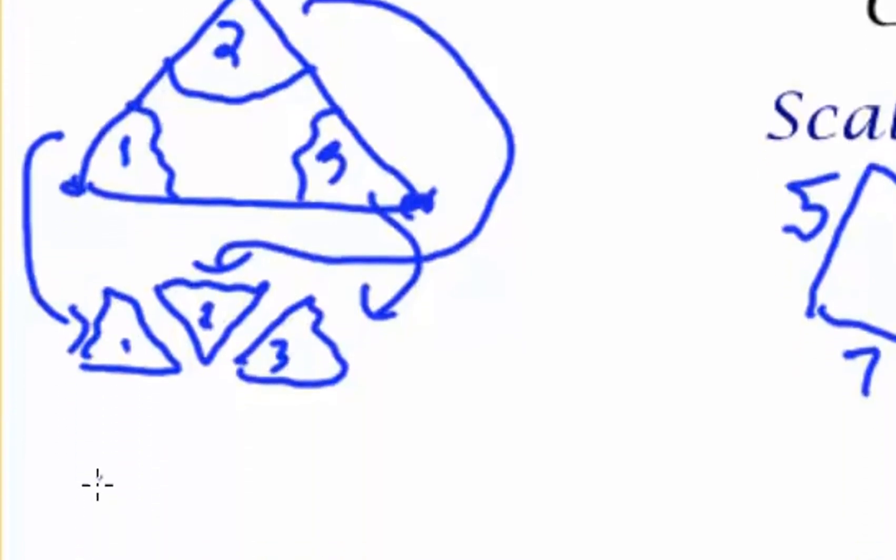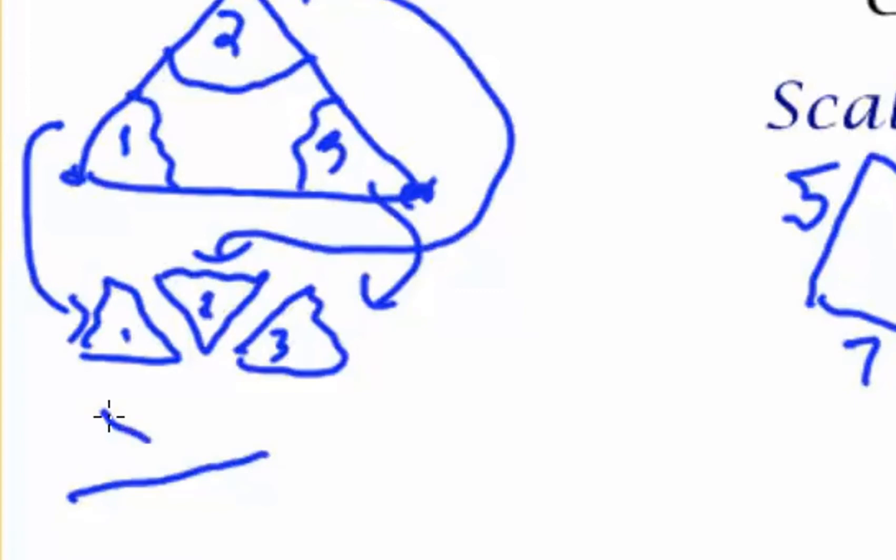Angles one, two, and three will end up being all on the same line and then will all end up equaling to 180 degrees. This is called the triangle sum theorem because all three angles in every single triangle add up to 180.